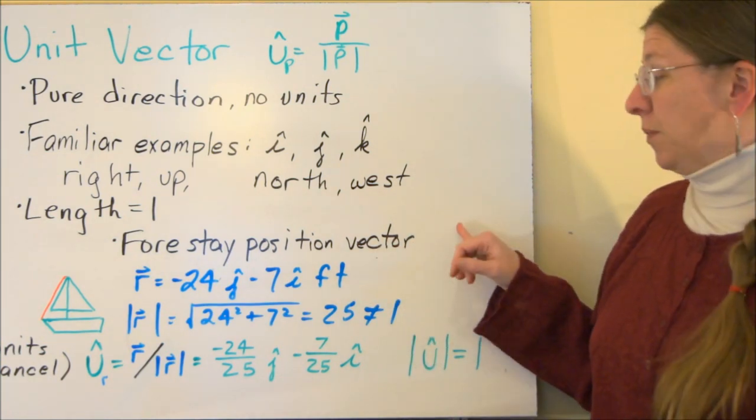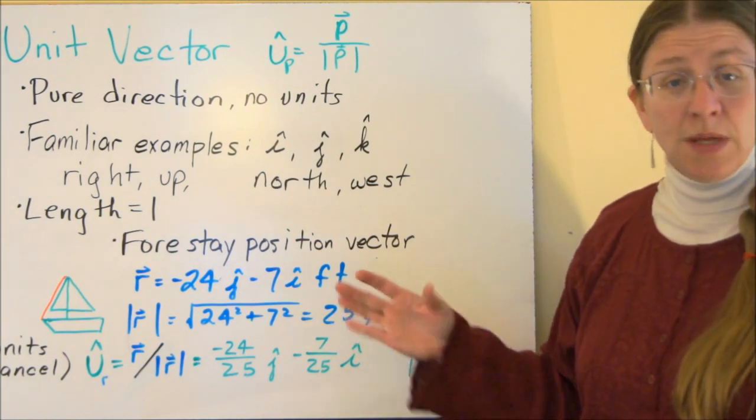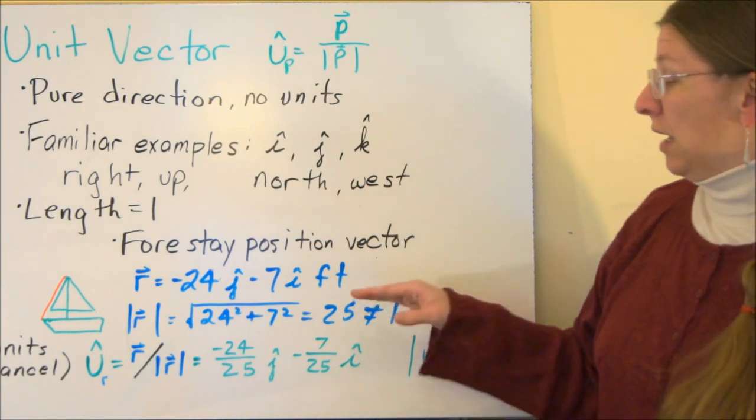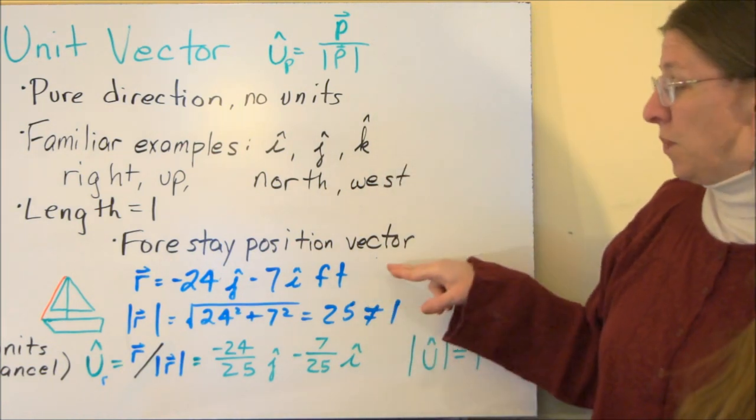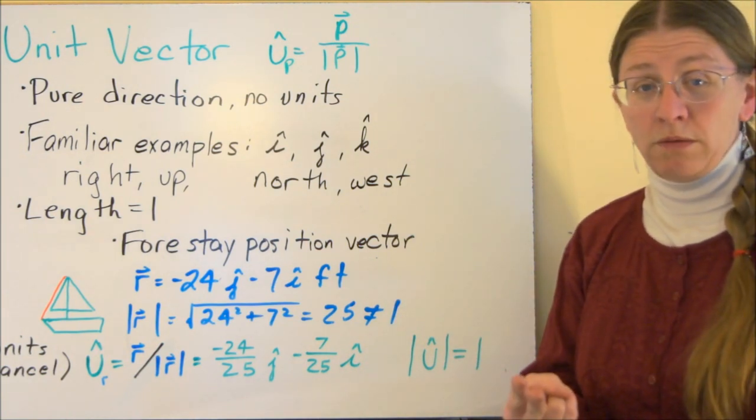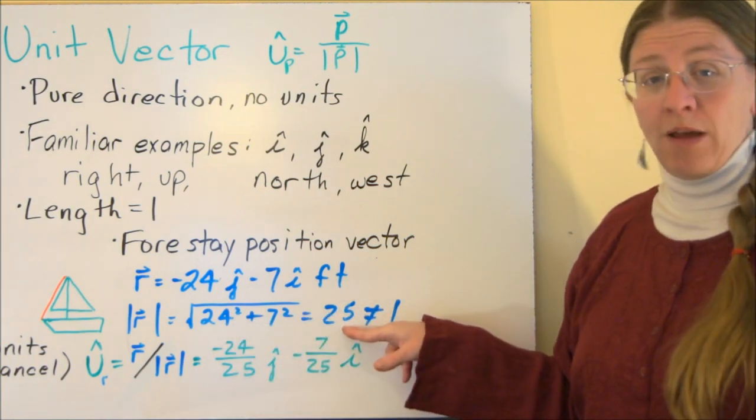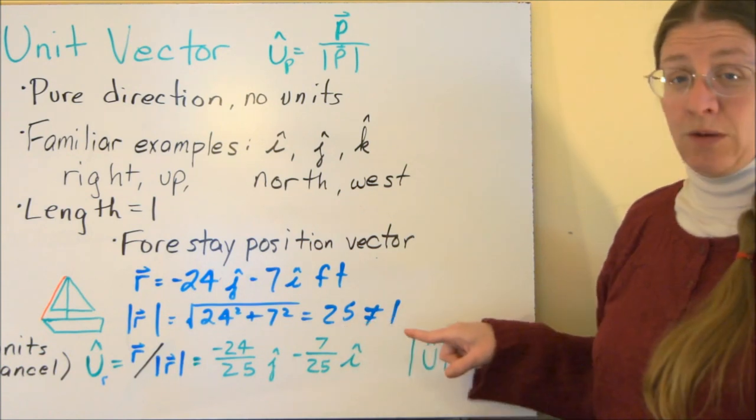The forestay that we had a minute ago in the position vector was not a unit vector. Sometimes it is. If you're only going to go 1 foot, then that would also be a unit vector. It would also have length 1, but it would also have units. So the unit vector here, I need to get rid of the units, and I need to make it have length 1. So right now, it has length, by the Pythagorean Theorem, it has length 25. That's how long my forestay actually is on the boat.